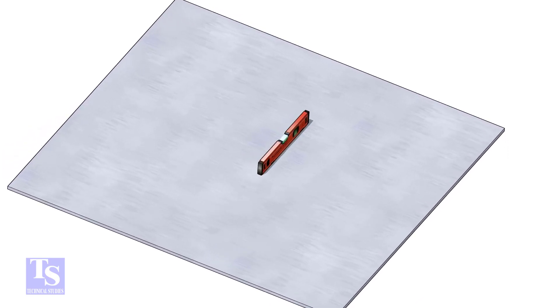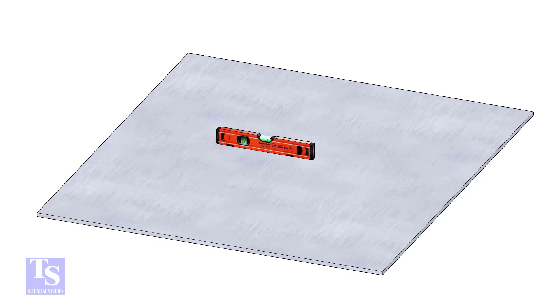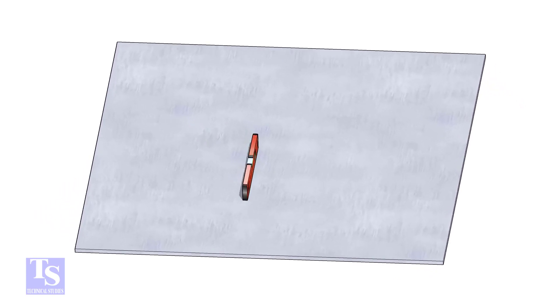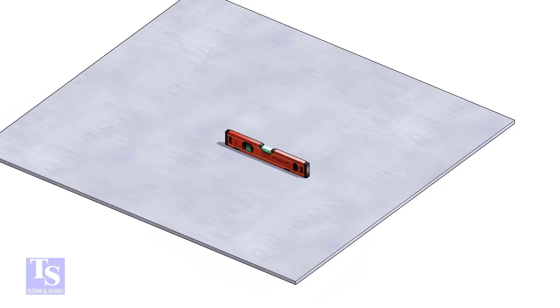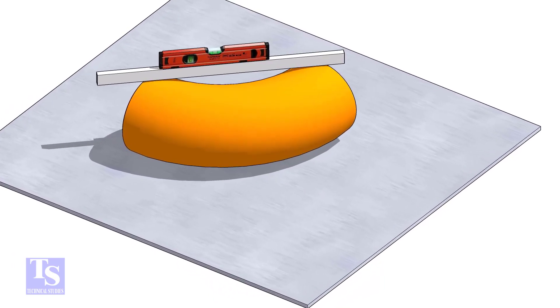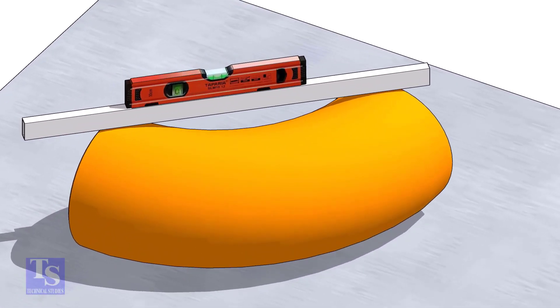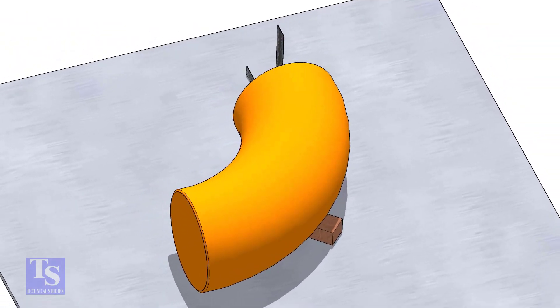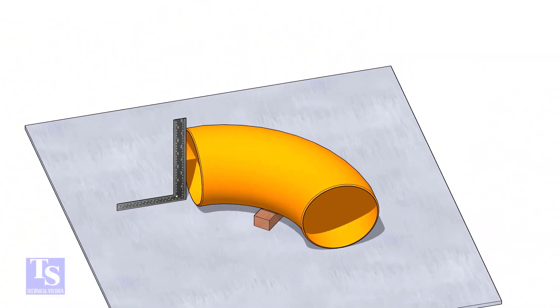Let us mark the center of the elbow. Choose a leveled plate and put the elbow on it. Check the level of the elbow. Check the squareness of the face of the elbow with the plate. If necessary, put some packing below as shown.